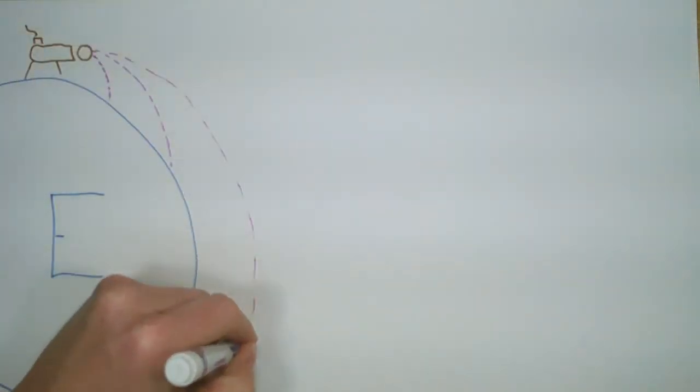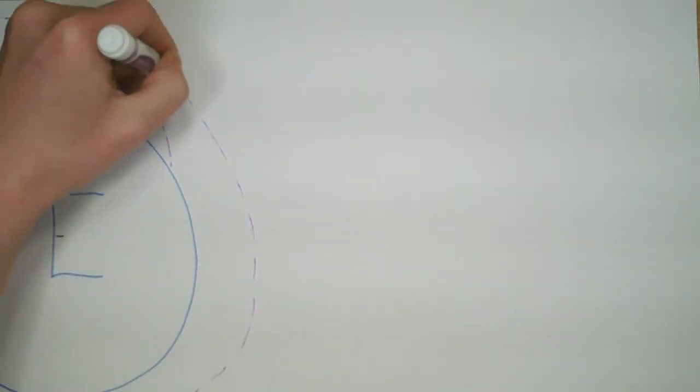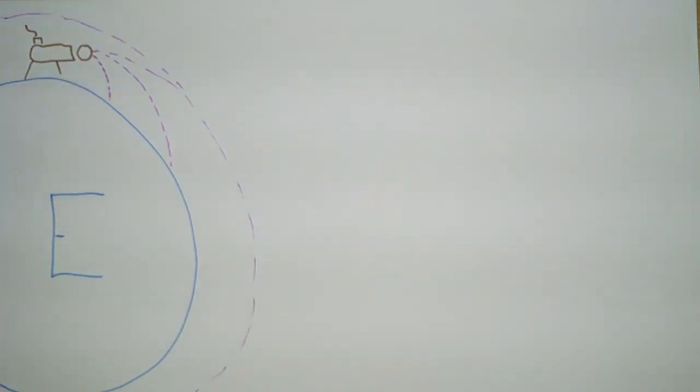But if you could get the velocity just right, what would happen is the cannonball would orbit the Earth. Because the curvature of the Earth would cause the Earth to fall away at the same rate that the cannonball would fall toward the Earth, it would go around and around and around, always falling but never falling down.